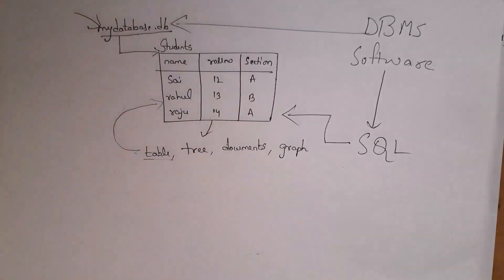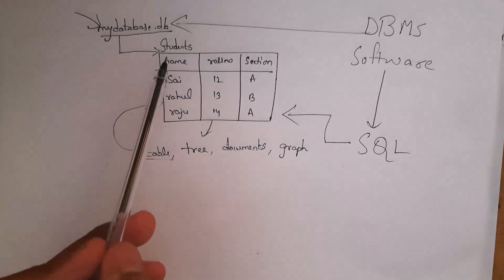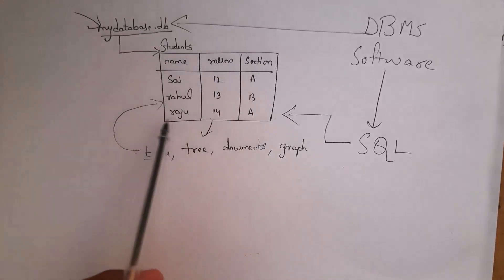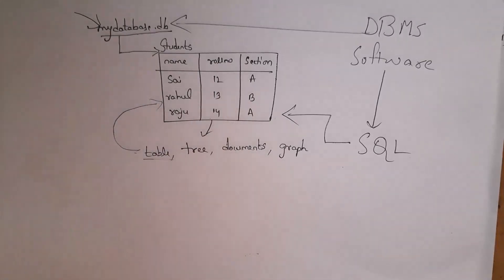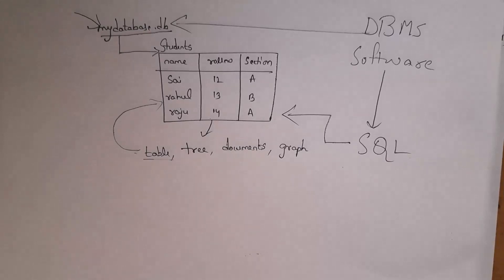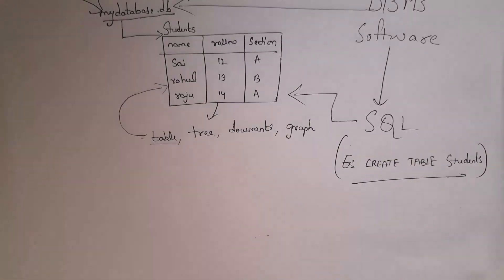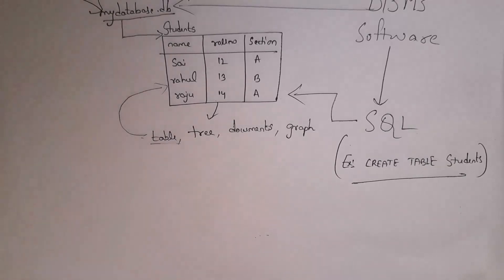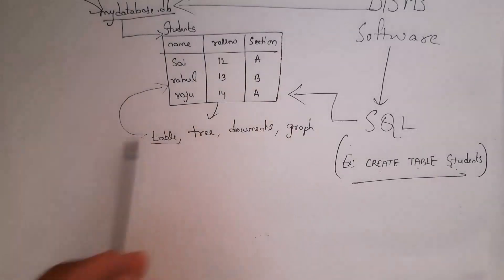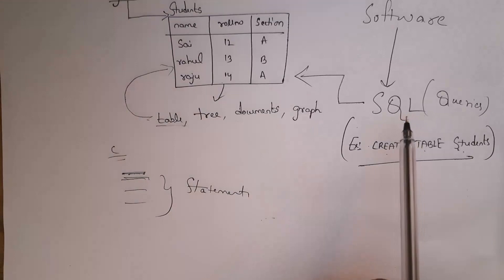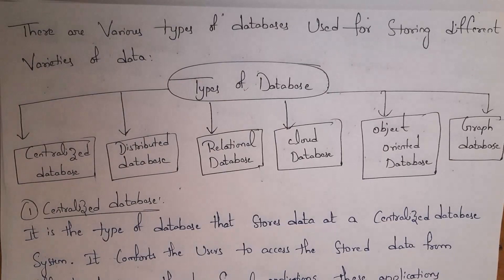Most databases use Structured Query Language (SQL) for writing and querying data. For example, to create a database and insert a students table with column names like name, roll number, and section, you open a DBMS software and use SQL commands. For example, to create a table named 'students', you write the SQL command 'CREATE TABLE students' — it will create the students table inside your database. Whatever code we write in such a query language is called a query.